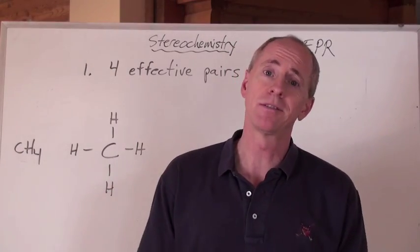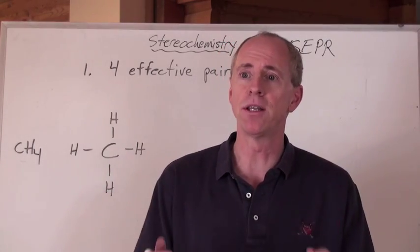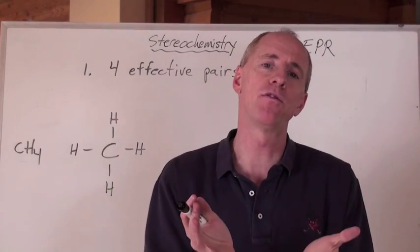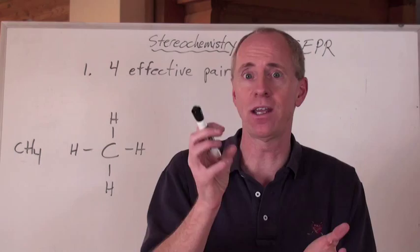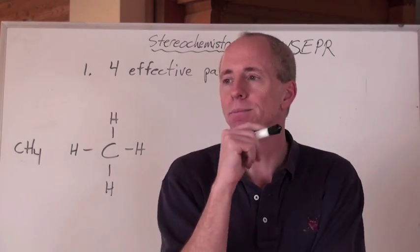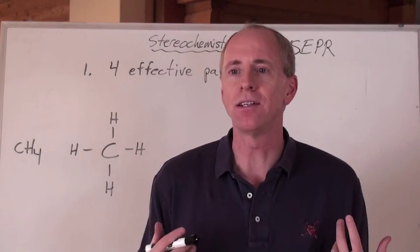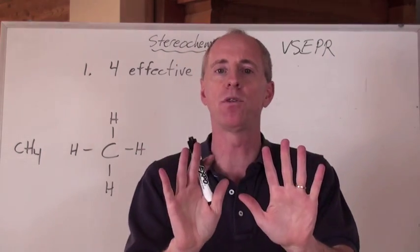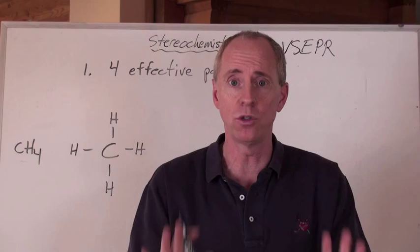Lewis diagrams are great about telling us about bonding, how these things are bonded, what the relative idea is of arrangement for the atoms around, say, a central atom. But you know what? What it doesn't really tell us is what the molecule looks like in three dimensions, because everything is flat with a Lewis diagram on a piece of paper in two dimensions.